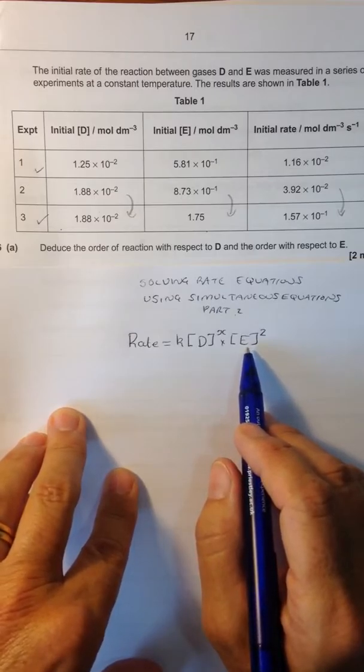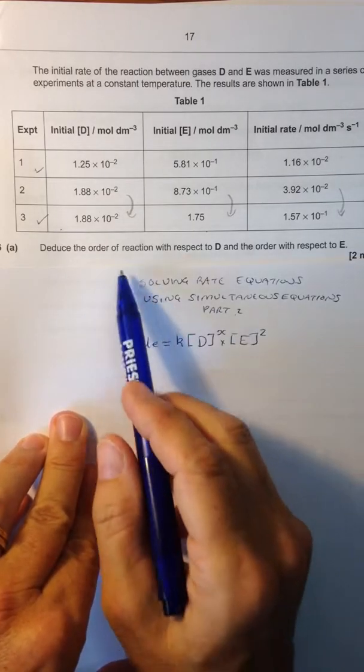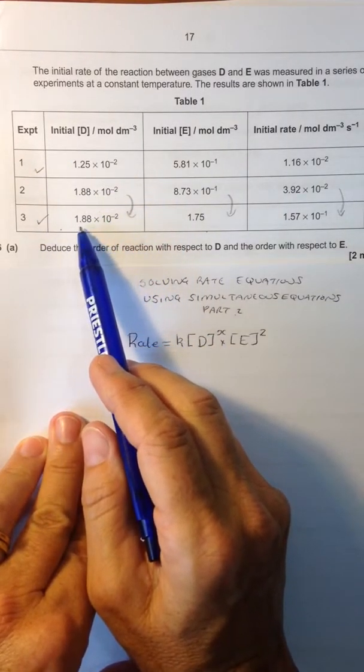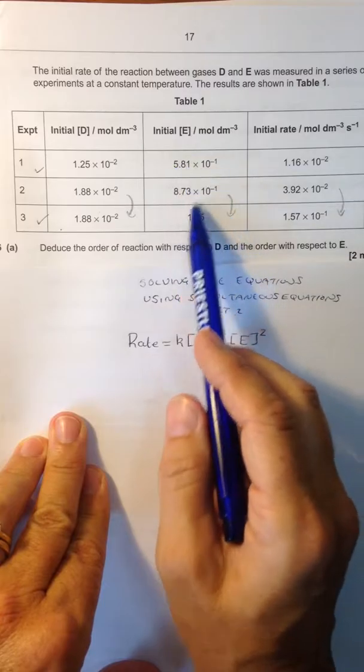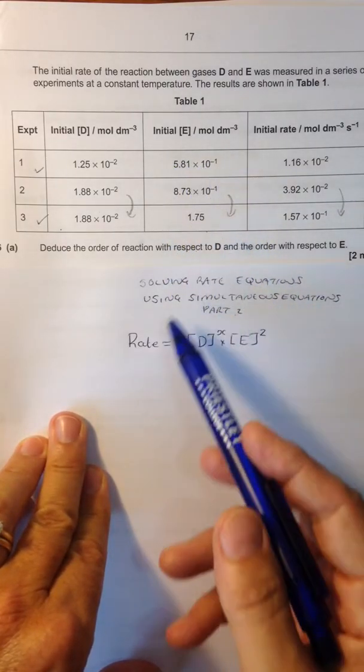We're going to use our simultaneous equations again. And this time, let's choose any two experiments. Let's choose experiment 1 and 3 where we've varied the concentration of D. It doesn't matter that we've varied the concentration of E because we already know the order with respect to the concentration of E.